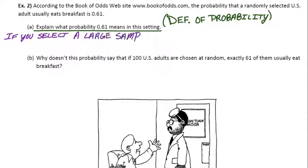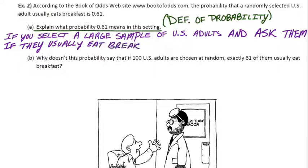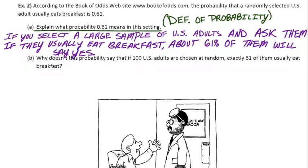So, what does it mean in this setting? Well, if you select a large sample, large being the keyword there, if you select a small sample, it could be a lot of variability. So, if you select a large sample of U.S. adults, and do what with them? Well, you've got to ask them the breakfast question. And ask them if they eat breakfast or not. Ask them if they usually eat breakfast. What would you expect? In a large sample, the responses should average out, and we can expect a nice number. In this case, we'd expect about 61% of them to say yes to that question.